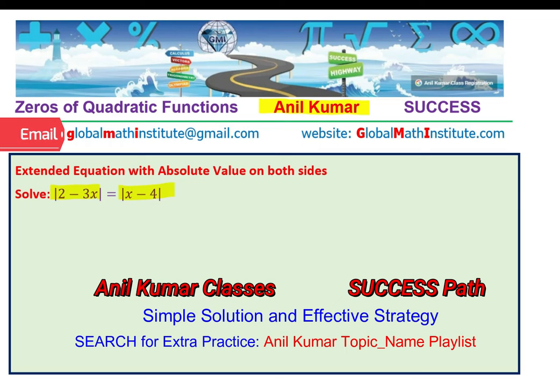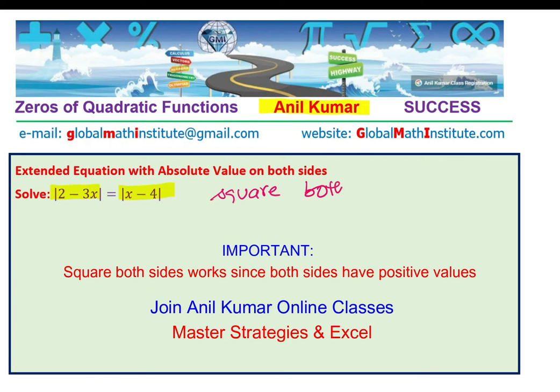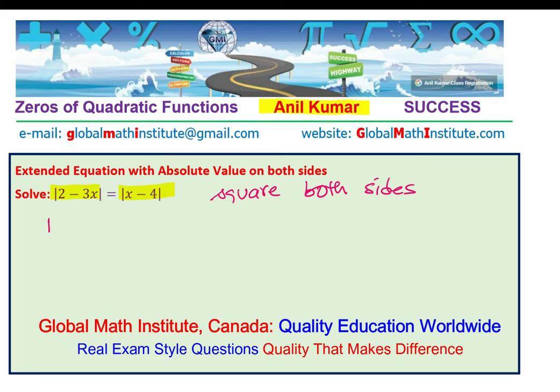In this particular case we'll not only solve but understand a strategy which can be very helpful and can always be applied. The strategy here is to square both sides. In an absolute value we already have positive number as an output, so if you square we get positive itself. That means squaring both sides should work always.